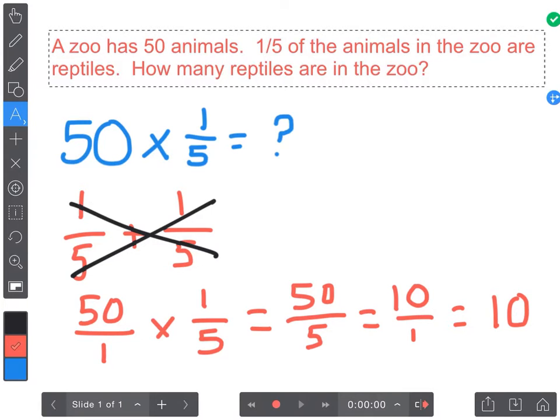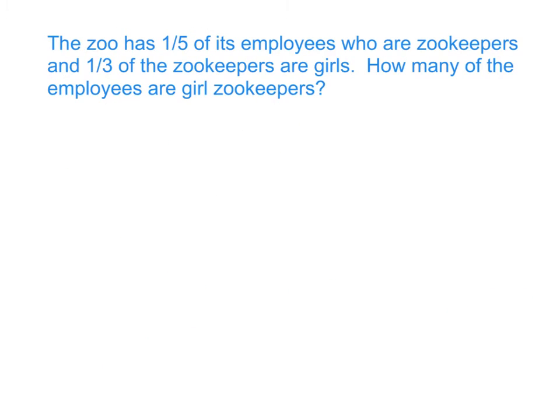Alright, so let's go ahead and move on to fraction by fraction. So let's keep looking at that same zoo. This zoo has one-fifth of its employees who are zookeepers and one-third of the zookeepers are girls. So we want to know how many of the employees are girl zookeepers.